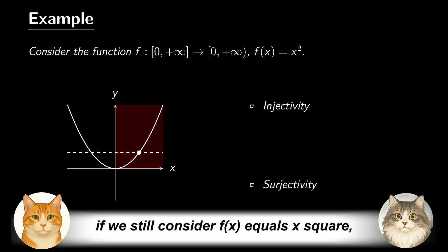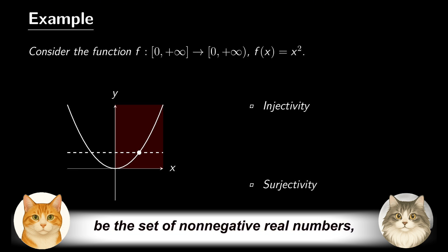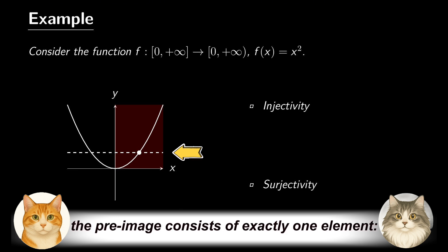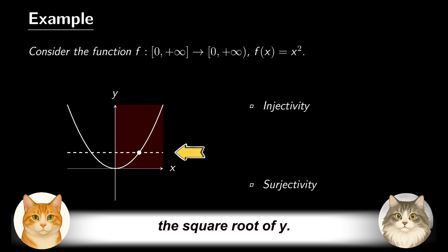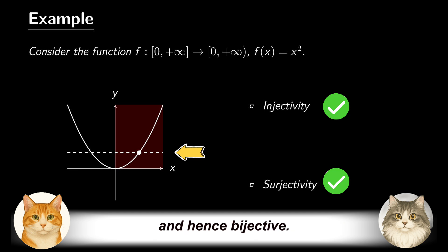Similarly, if we still consider f(x) equals x squared, but this time let both the domain and the codomain be the set of non-negative real numbers, then for each y greater than or equal to zero, the preimage consists of exactly one element — the square root of y. We conclude that the function is both injective and surjective, and hence bijective.